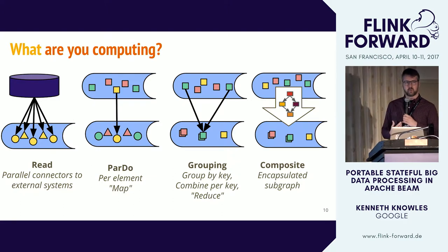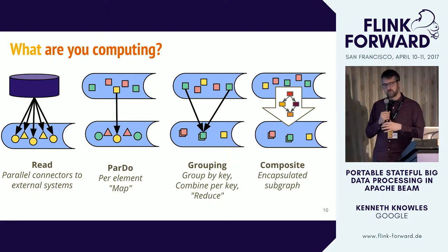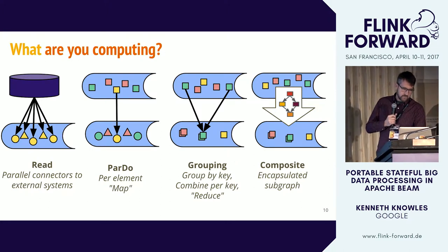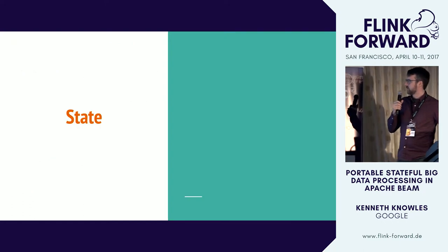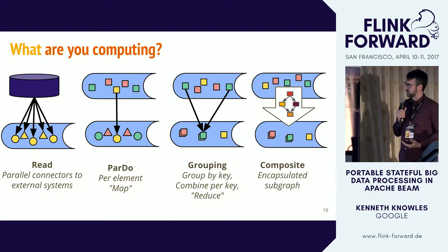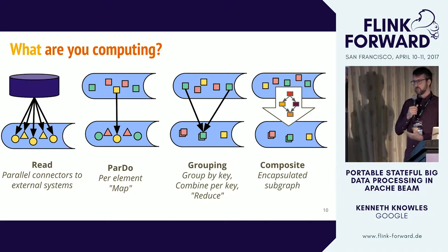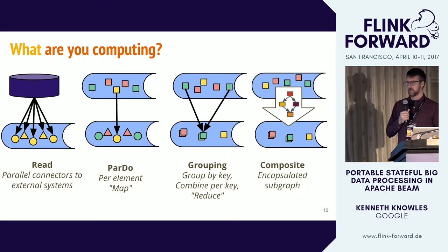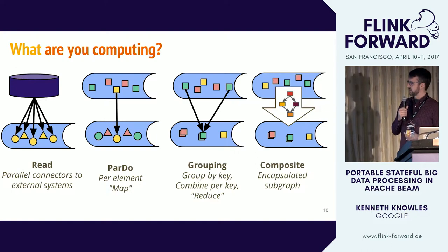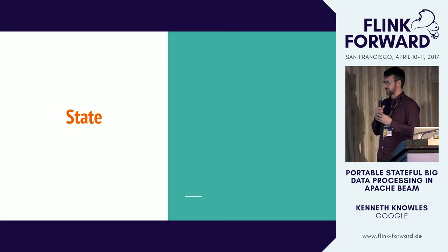Because Beam is intended to be a programming model, there's also composite transforms — you can build a transform that looks just like one of the primitives so users can use it transparently. Importantly, none of these are talking about event time windowing, and there's nothing here about triggering. These are all designed to be mostly orthogonal to event time and processing time triggering, which comes up as we start talking about how you'd interact with state.